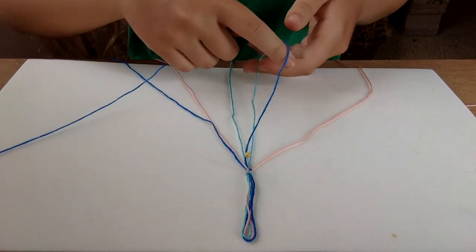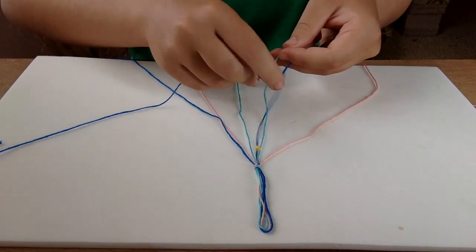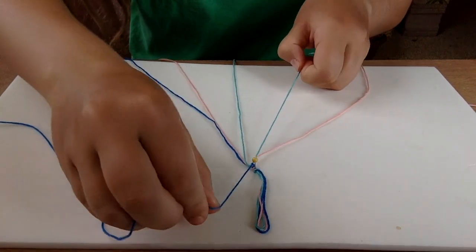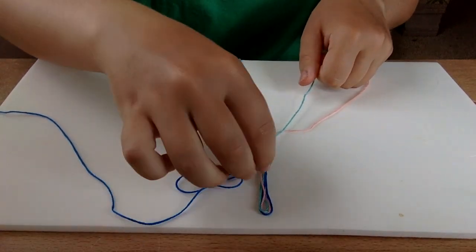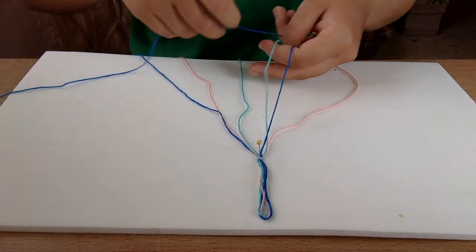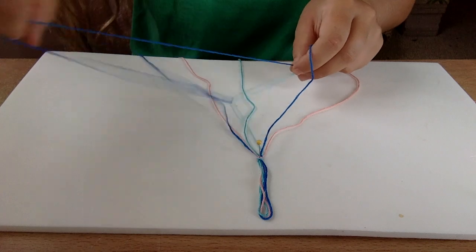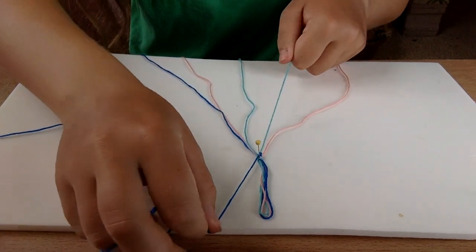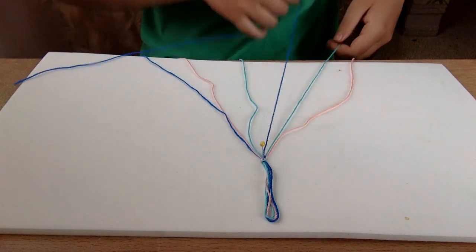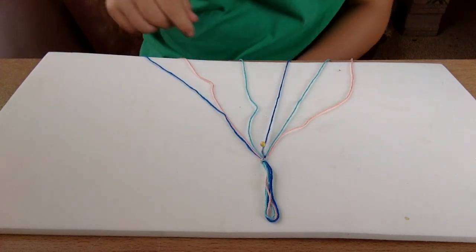And then, our next string is green. So, we make a four, tuck the tail through, and pull. And then, for the second half, we do the same thing. So, we make a four, tuck the tail through, and pull. There we go. And now, our strings look like this.